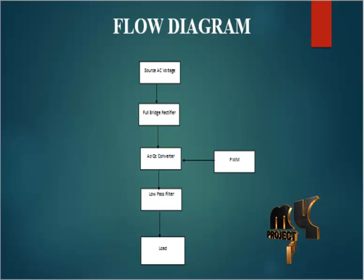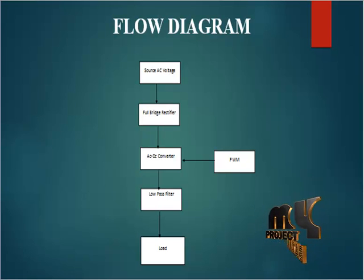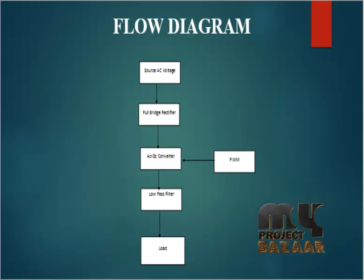After the AC-to-DC conversion, we use PWM controllers and PID controllers. We get the output from the current source through the converting process. After that, we apply low-pass filters to filter the process output. We fix the constant value, and both the PID and PWM controllers together produce one output. Finally, we connect to the load.